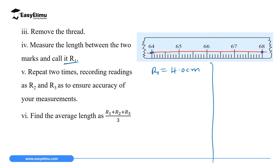Repeat the whole procedure: wrap the thread 10 times, make marks, measure, and record R2. Then do it a third time and record R3. We repeat three times for accuracy — just as in scientific methods, after forming a hypothesis you test it by repeating the procedure as many times as possible.